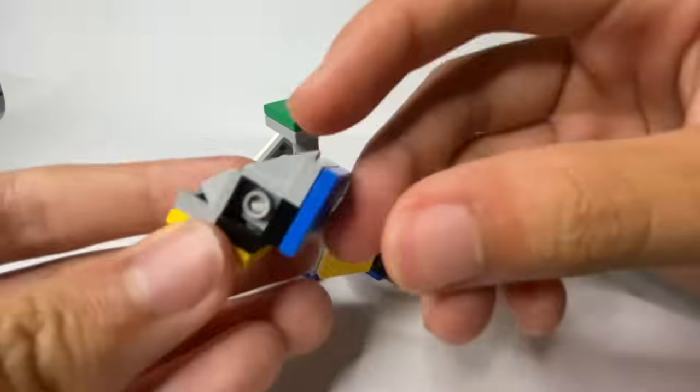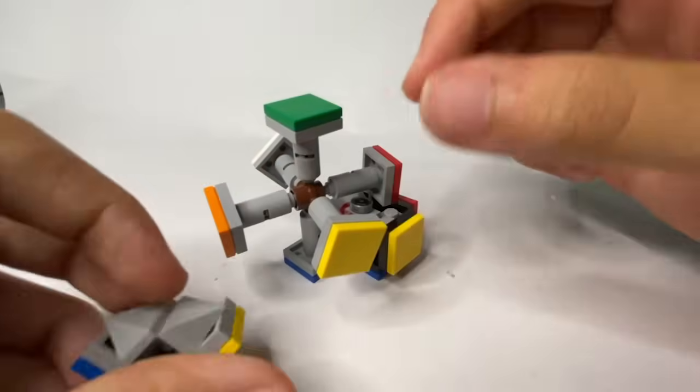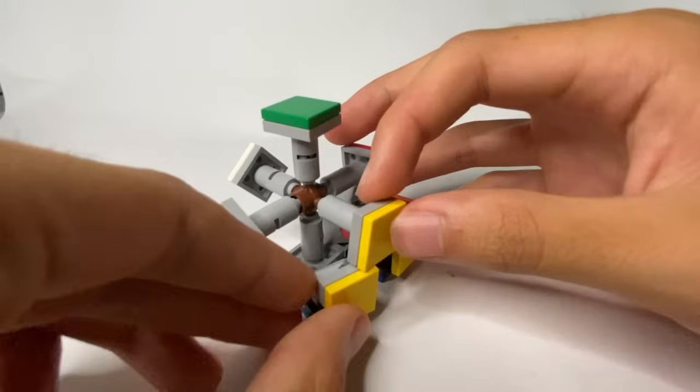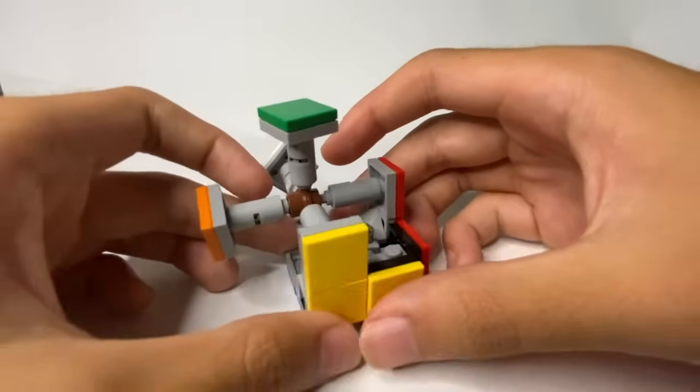Now make 12 edge pieces, including the one you just made, and eight corner pieces. Make sure they have the right colours on them. Slot them into the cube.